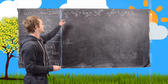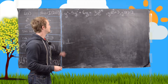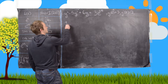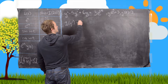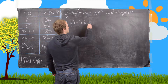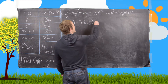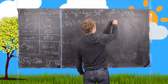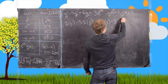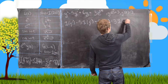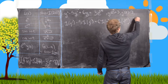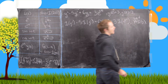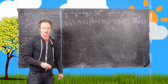Now we want to apply the Laplace transformation to both sides of this equation. That gives us the Laplace transform of y double prime, minus 5 times the Laplace transform of y prime, plus 6 times the Laplace transform of y, equals 3 times the Laplace transform of e to the 2t. Let's set capital Y equal to the Laplace transform of little y, just for notational convenience.